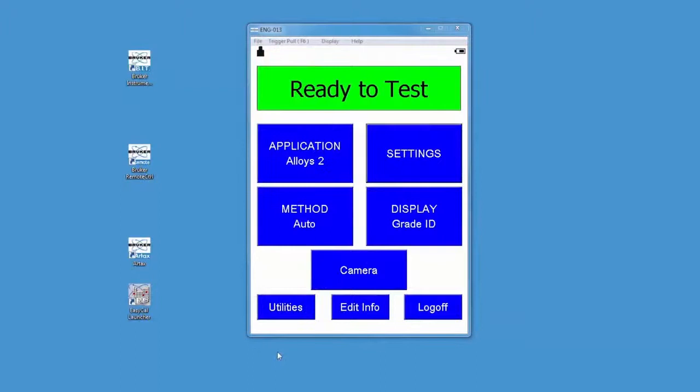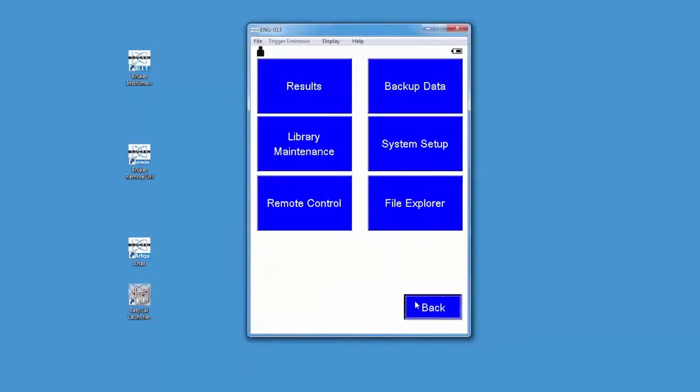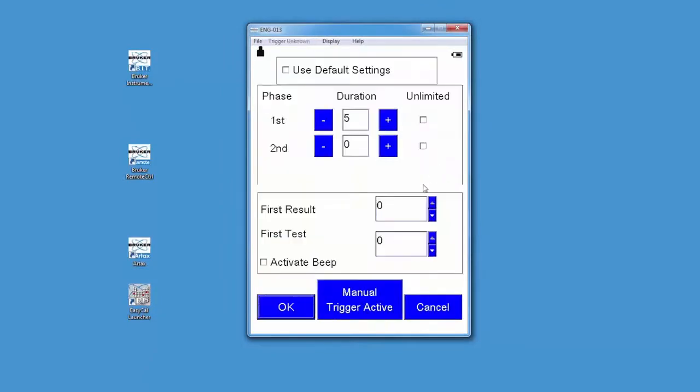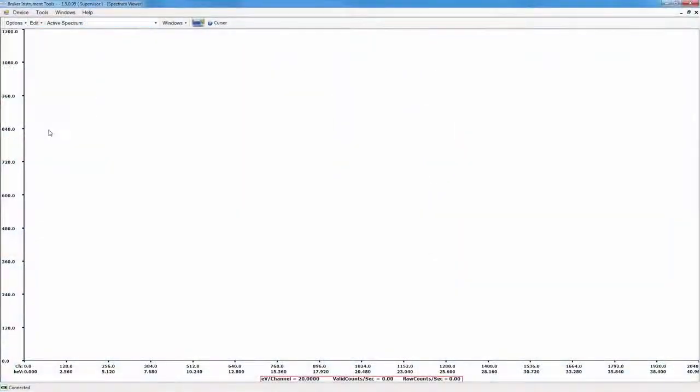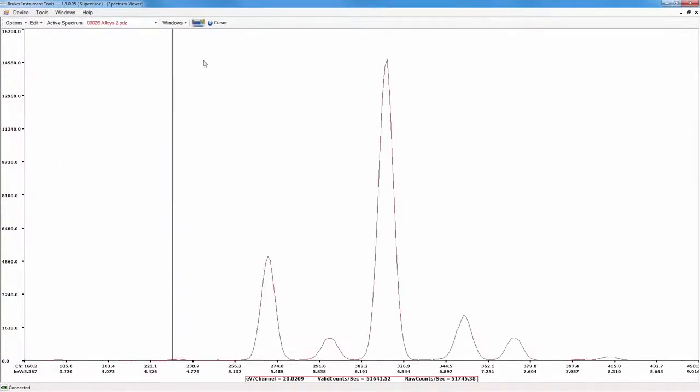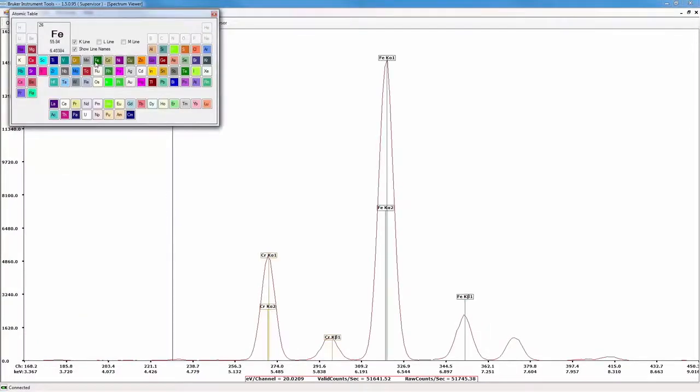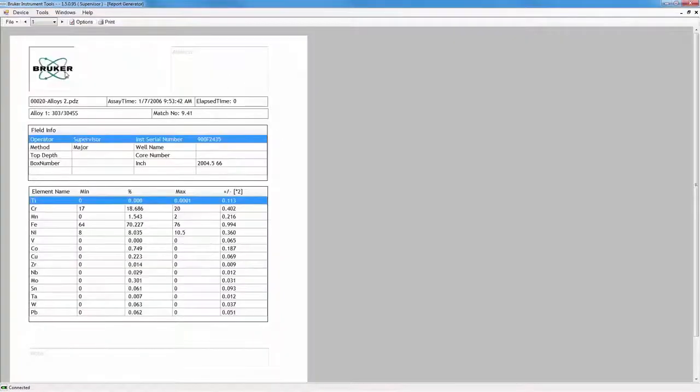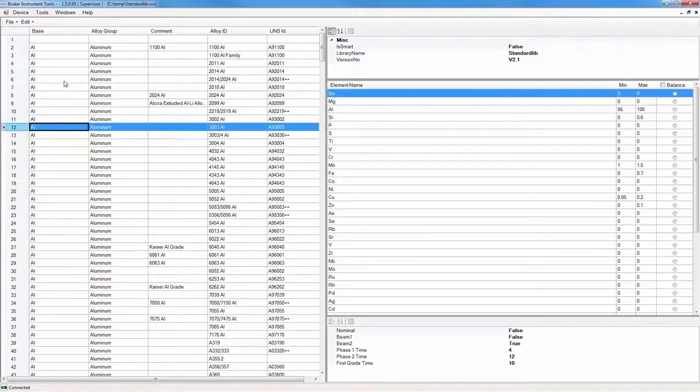Toolbox PC software incorporates remote viewing and control combined with Bruker instrument tools to provide maximum information and control of the CTX. Spectrum display, report generator, grade table editor, limits editor, and multi-user support are features of Bruker Instrument Tools PC software.